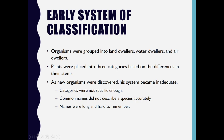In the early system of classification done by Aristotle, organisms were grouped into land dwellers, water dwellers, and air dwellers. Plants were placed into three categories based on differences in their stem. However, as new organisms were discovered gradually, his system became inadequate. The categories were not specific enough, common names did not describe a species accurately, and names were long and hard to remember.